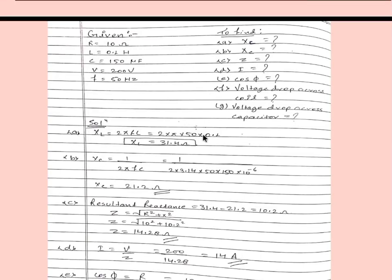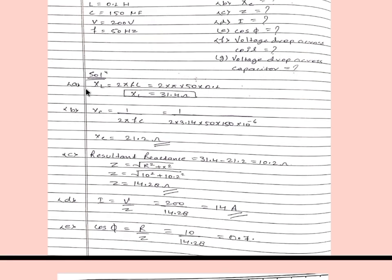First of all we will write the given values: R, L, C, V, and F. We have to find XL, XC, Z, I, cos phi, voltage drop across the coil, and voltage drop across the capacitor. The solution is very easy — we just need to remember the formula and put in the values. XL is equal to 2 pi f L, and putting in the values we get XL equal to 31.4 ohm.